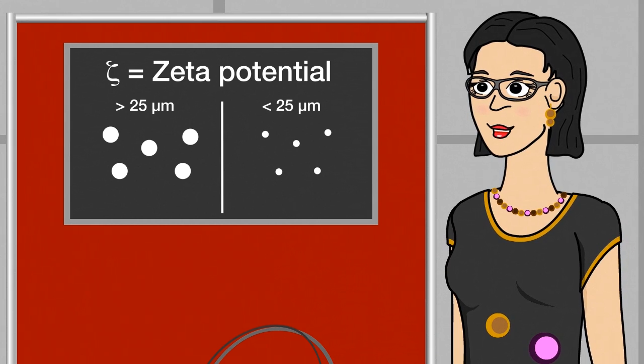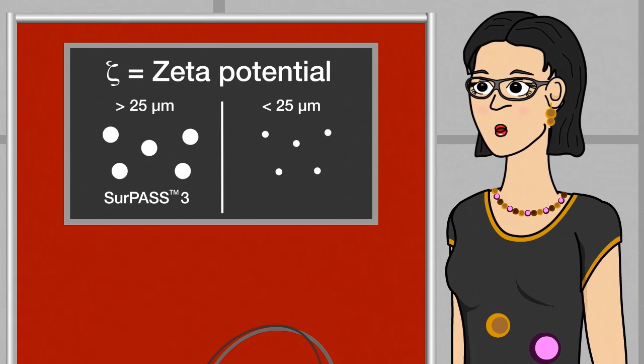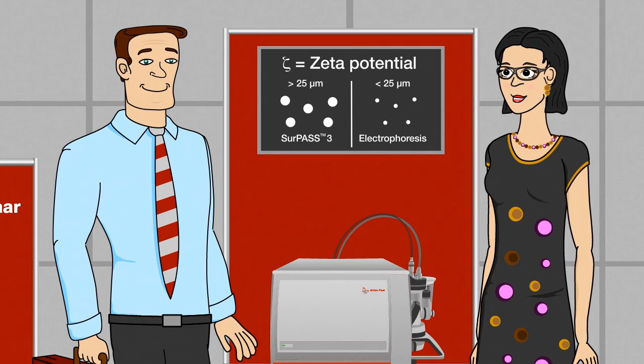If you want to analyze the zeta potential of macroscopic solids, you use Surpass. If you want to analyze the zeta potential of smaller particles, you use an entirely different method, electrophoresis. This tells you how stable particle dispersions are, for example.